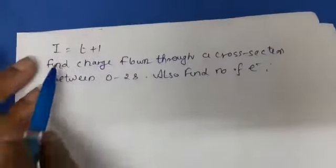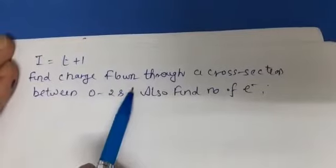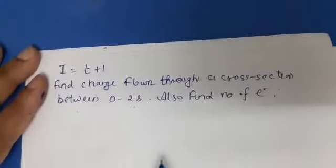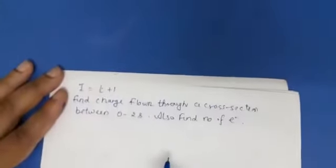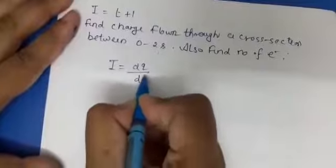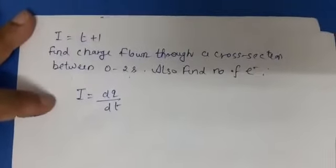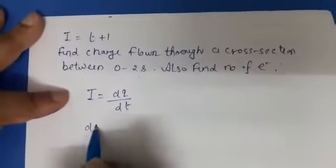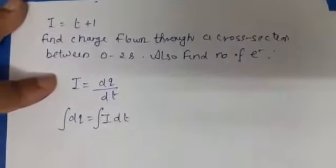Coming to the next numerical — current I is depending upon time, given by I = t + 1. Find the charge flow through the conductor between time t = 0 to t = 2 seconds. Also find the number of electrons. Here current is given and you have to calculate charge. The relation between current and charge is I = dQ/dT. If you remember in class 11 also, we used such concepts in kinematics. So if you have to find Q, write dQ = I dt. When you integrate it, Q equals the integral of I dt, which is the integral of (t + 1) dt, with limits 0 to 2 seconds.